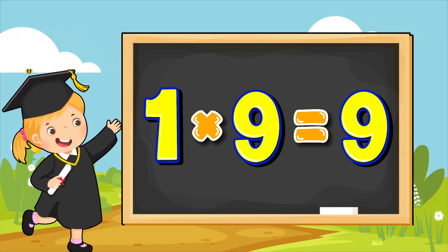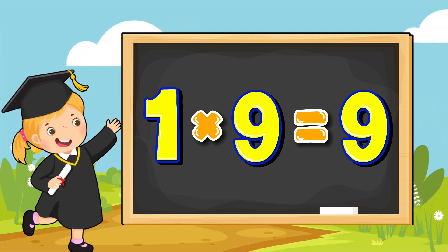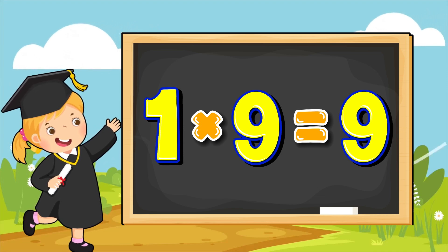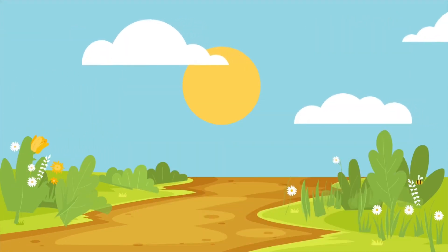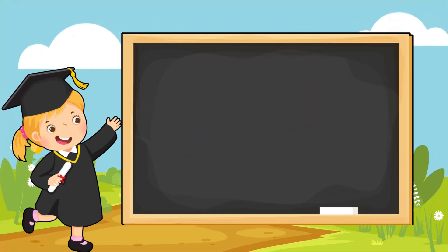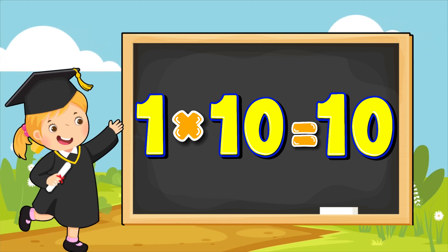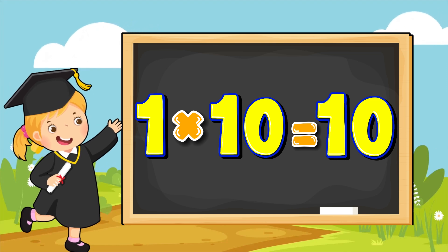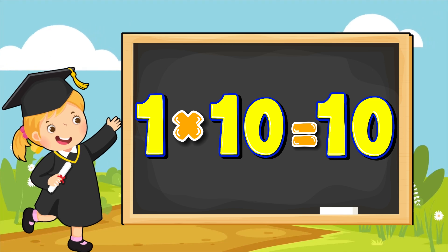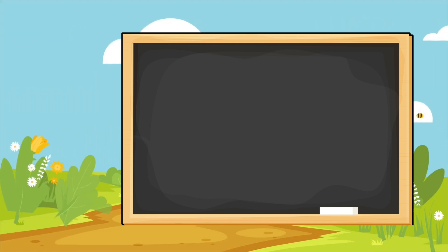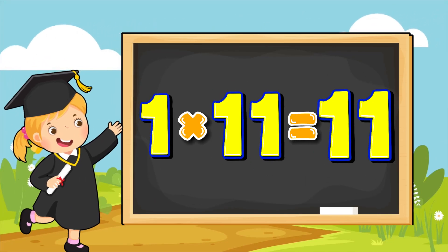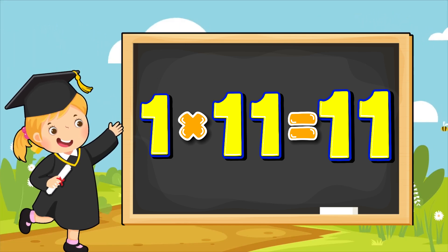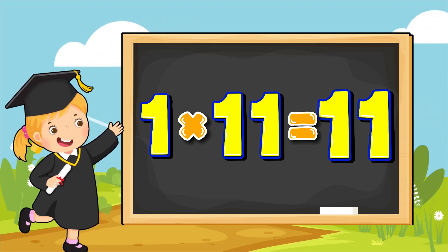One multiplied by nine equals to nine. Repeat after me. One multiplied by nine equals to nine. One multiplied by ten equals to ten. Say it along. One multiplied by ten equals to ten.